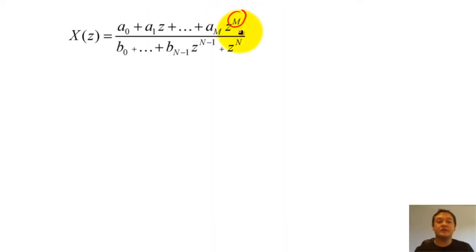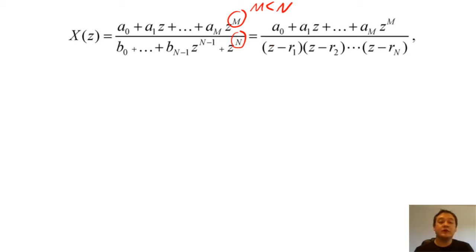If the degree of the numerator is less than the degree of the denominator, X of Z is a proper function. And the denominator can be rewritten as a set of roots multiplied together.